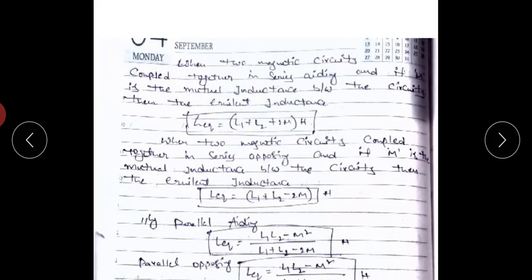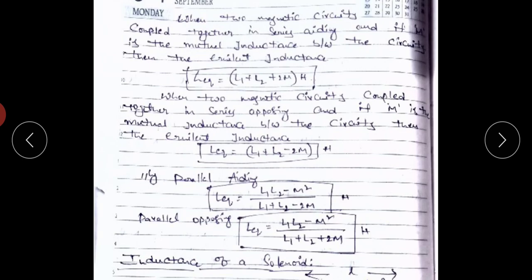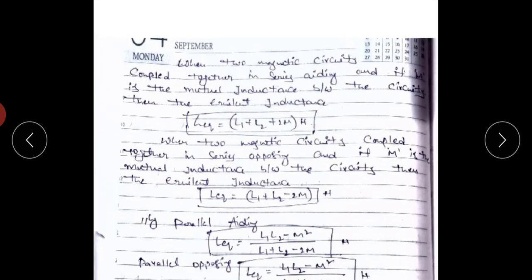Next are the equivalent inductance formulas. In magnetic circuits there are four connections. In the series aiding connection, if two coupled coils have self-inductances L1 and L2 and mutual inductance M, then the equivalent inductance L_eq equals L1 plus L2 plus 2M Henrys.